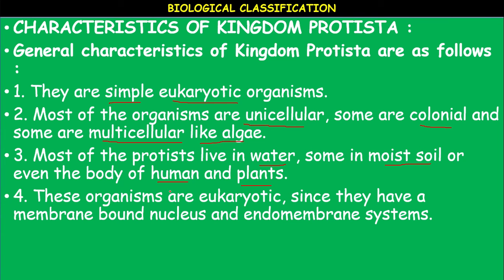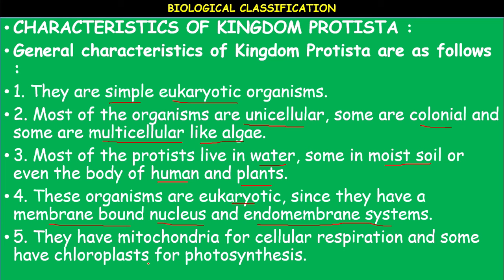Protista are eukaryotic because they have a membrane-bound nucleus and endomembrane systems — meaning cell organelles with membranes are present. They have mitochondria for cellular respiration, and some have chloroplasts for photosynthesis. So some of them are autotrophic and some are heterotrophic; the autotrophic Protista possess chloroplasts in their cells. Mitochondria is the organelle involved in cellular respiration.